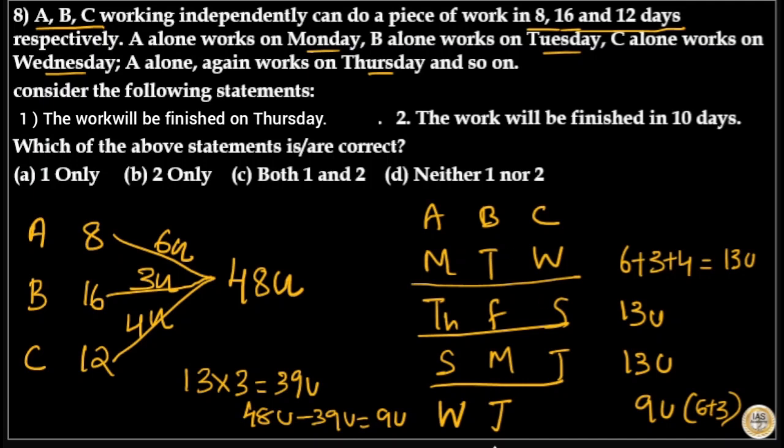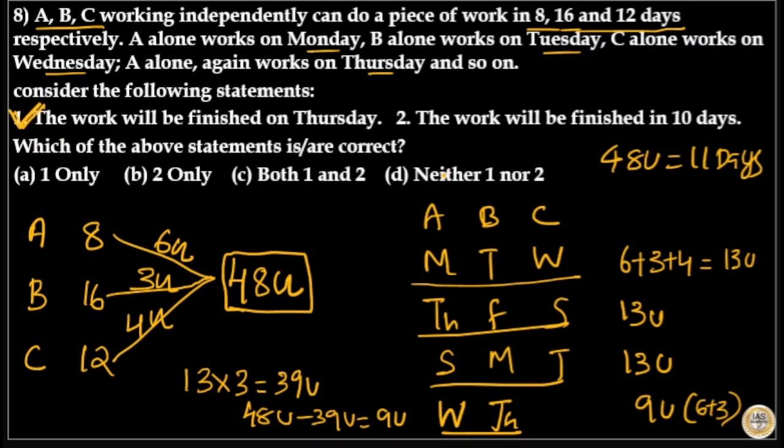Total days for completing this 48 units is equal to 11 days. 3 plus 3 plus 3 plus 2, that is 11 days is the number of days to complete this 48 units of work. Work will be completed Thursday. So option 1 is correct, the work will be finished on Thursday. The work will be finished in 10 days is wrong. So option A is correct, only 1 is correct.